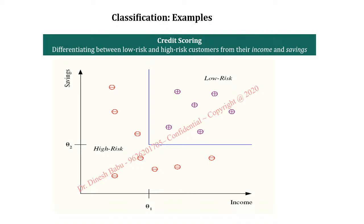Next is classification. We can classify records based on our target outcome. For example, we can classify whether a customer is high risk, medium risk, or low risk. When we want to classify results, we go for a classification algorithm. In classification we have Naive Bayes, KNN, and SVM — these are all classification techniques.